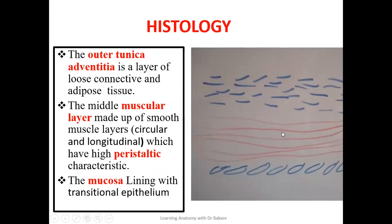This smooth muscle basically allows for peristaltic movement of the ureter, and that is why it is able to propel urine down along the lumen to where it will be stored in the urinary bladder. Then the deepest lining is the mucosa layer, which is basically made up of epithelium. The type of epithelium seen in the mucosa layer is transitional epithelium.